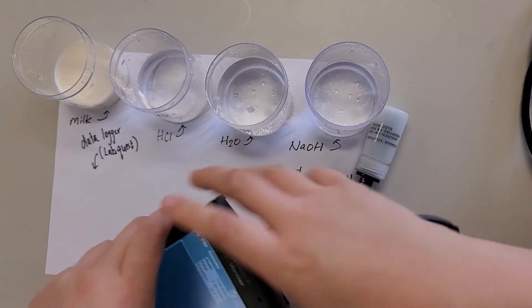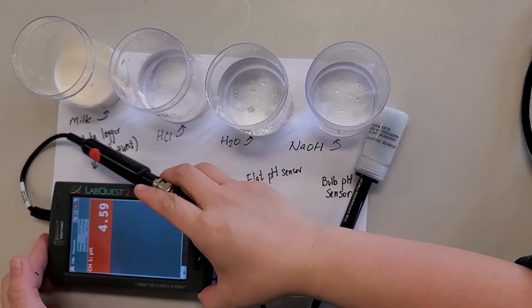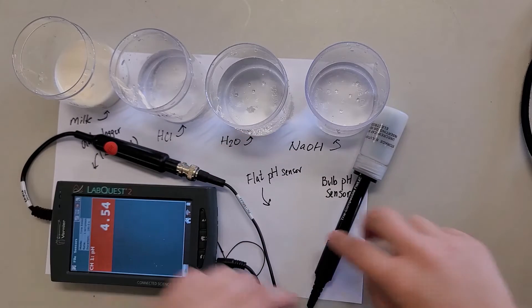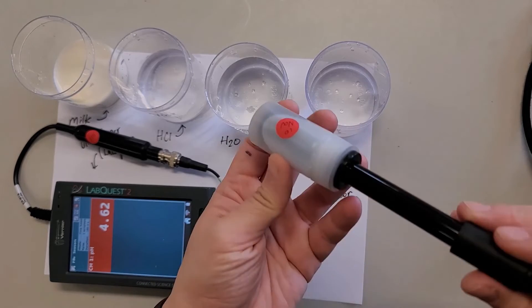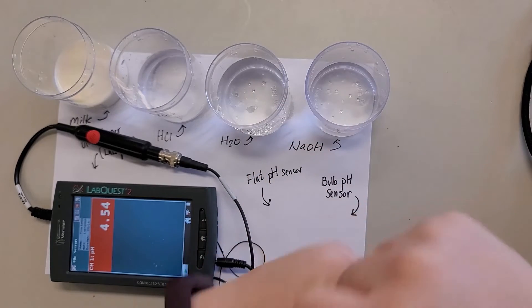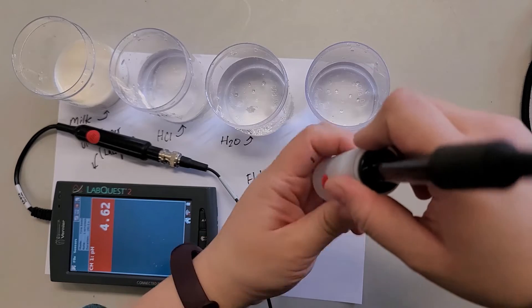The good thing about using the Logger Pro is that you can measure three sensors at the same time. Sometimes it takes some time to measure it. Anyway, here's the Logger Pro. Usually it's based in a buffer solution, so it's very important that you screw it out.